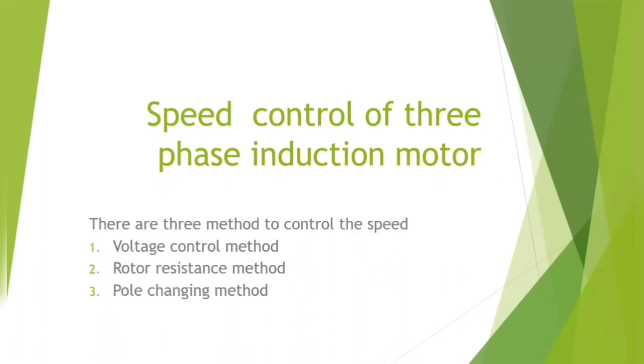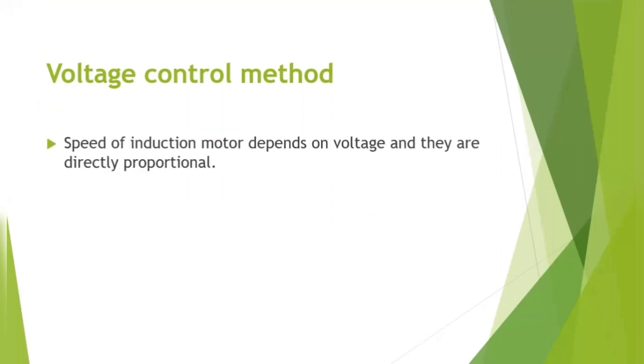voltage control method, rotor resistance method, and pole changing method. Coming to the voltage control method, the speed is controlled by variation of the voltage, and the speed of induction motor depends on the voltage and they are directly proportional.